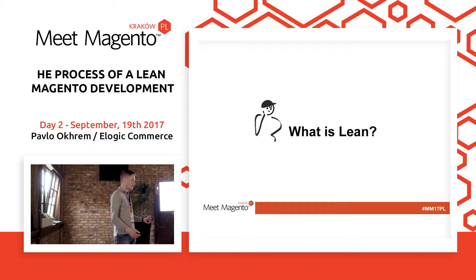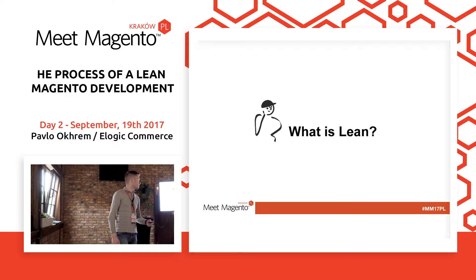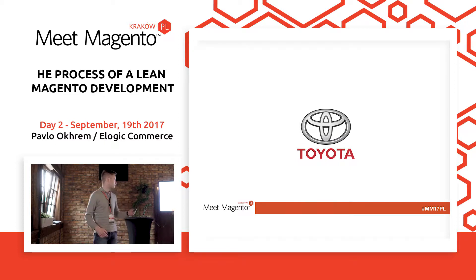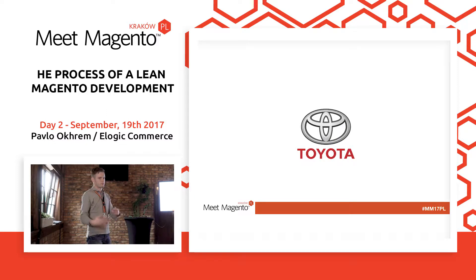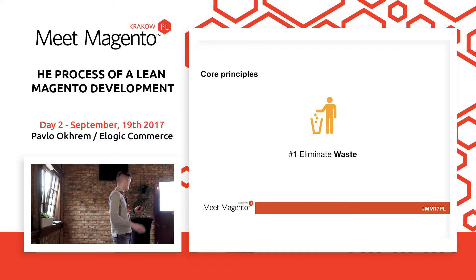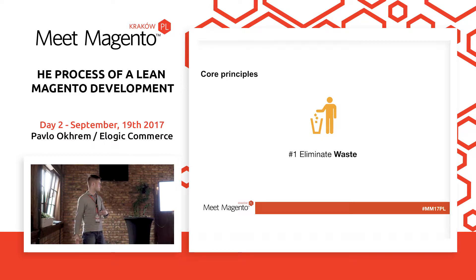First of all, what is Lean? Lean comes from the classical production. It was first invented by Toyota. Many of you, I think, have read the book which is called the DAO of Toyota, where they declare their principles of production. So to start off with Lean, they have some core principles of how to work with the Lean approach.